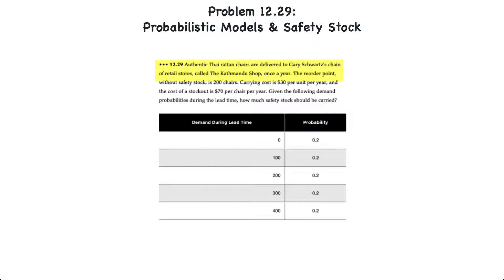We have a certain type of chair that's delivered to a retail chain once a year. The reorder point without safety stock is 200 chairs. The carrying cost is $30 per unit per year and the cost of stocking out is $70 per chair.